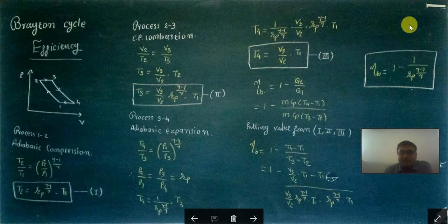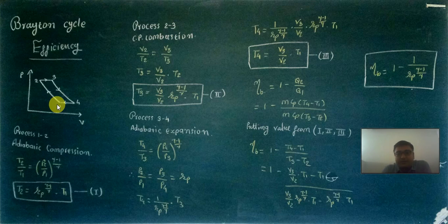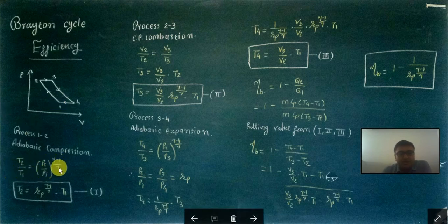Let's begin deriving the efficiency equation. In process 1 to 2, it is an adiabatic compression process. For any adiabatic process, the governing equation is: T2 divided by T1 equals P2 by P1 raised to gamma-1 upon gamma, which also equals V1 divided by V2 raised to gamma-1. In this case, we use the relation T2 by T1 equals P2 by P1 raised to gamma-1 upon gamma.